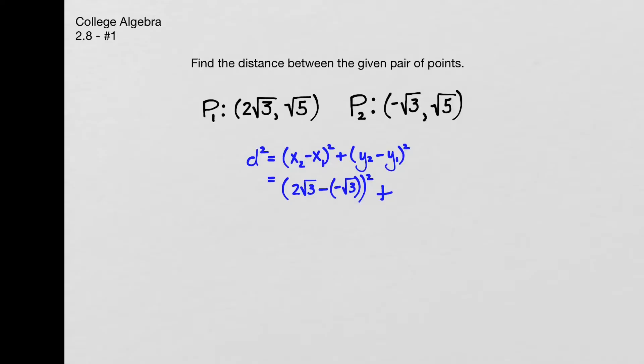Plus, now I'll do the same thing with the y value, so I'll subtract those. So we have square root of 5 minus square root of 5 quantity squared, but you can see that's going to turn into 0, so that's pretty straightforward.